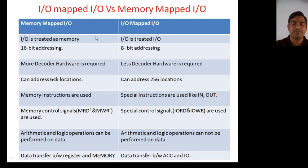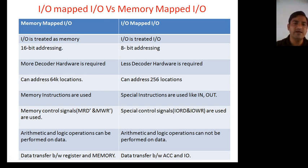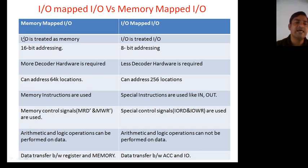Before that, I will differentiate between input-output mapped input-output and memory mapped input-output. In case of memory mapped input-output, data is coming into the microprocessor from memory, or data is going from microprocessor to memory. In case of input-output mapped input-output, data is coming from an input port into the microprocessor, or data is going from the microprocessor to an output port. Here, input-output is treated as memory, while in the other case, input-output is treated as input-output.